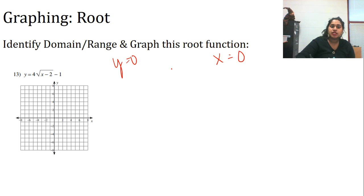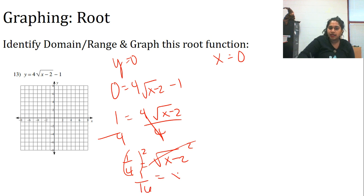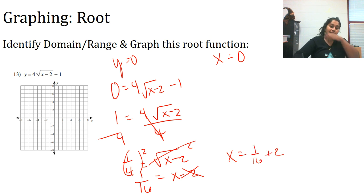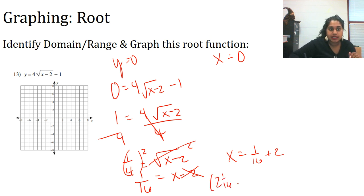For 0 = 4√(x - 2) - 1: bring the 1 over, divide away the 4, and get 1/4 = √(x - 2). Square both sides to get 1/16 = x - 2. Add 2 to get x = 1/16 + 2, which is 2 and 1/16. So there is a tiny intercept point at approximately (2 1/16, 0).